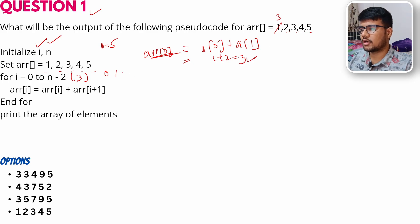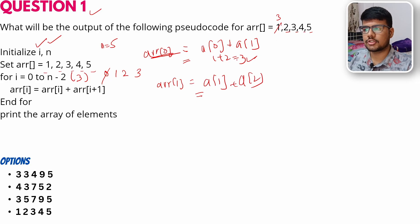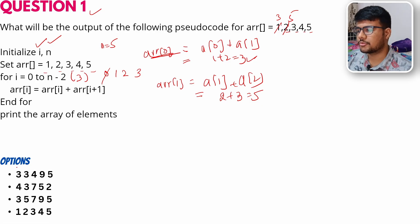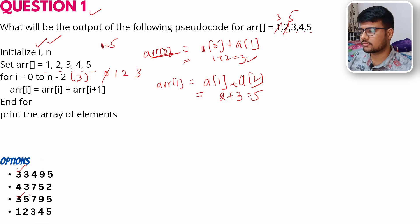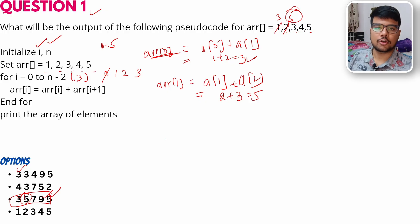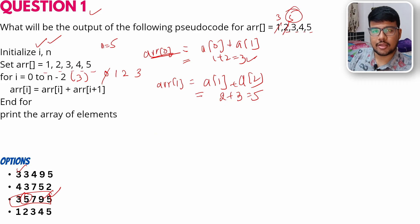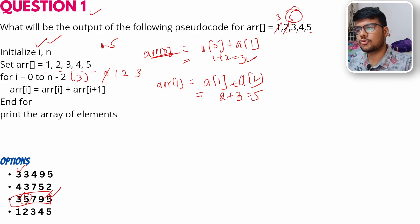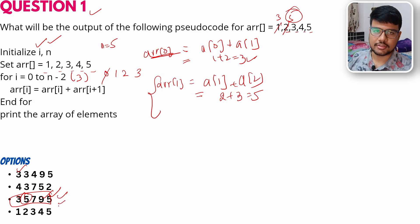On the second iteration, Array[1] = Array[1] + Array[2] = 2 + 3 = 5. Now check the options — two options start from 3 and the second element I found is 5, which matches. This is a smart approach: match each step against the options to save time. If they match, mark it and move on.